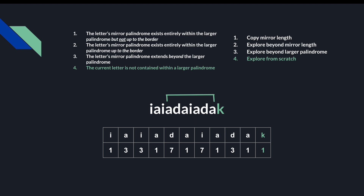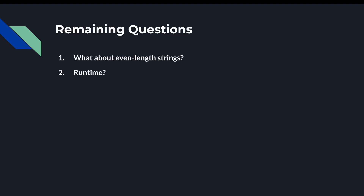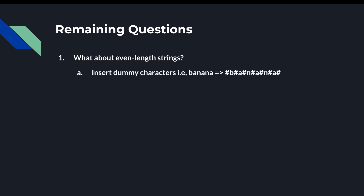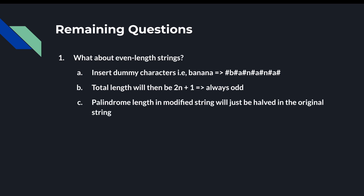That's the walkthrough of Manacher's algorithm. We have a few open questions remaining. This algorithm as presented only works on odd-length strings. For even-length strings, we can use a really neat trick suggested by Wikipedia: insert identical dummy characters between each letter so that the length of the modified string is 2n + 1. Since 2 times any number is even and an even number plus 1 is always odd, our modified string will always be an odd length. The palindrome length in the original string will just be half of the longest palindrome we find in the modified string.